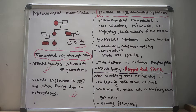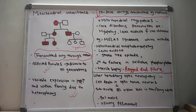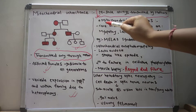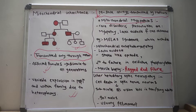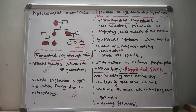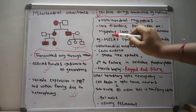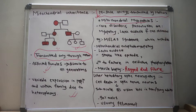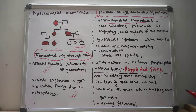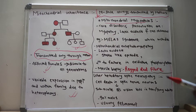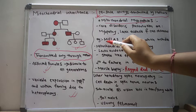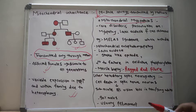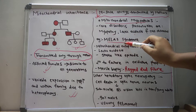Another important topic in mitochondrial inheritance is mitochondrial myopathies. Mitochondrial myopathies are real disorders whose presentation may include myopathy, lactic acidosis, and some form of CNS diseases. One example of mitochondrial myopathies is MELAS syndrome.